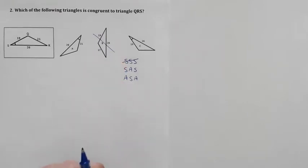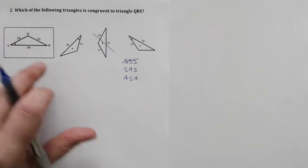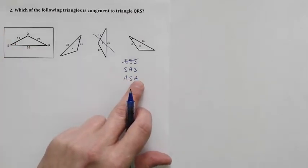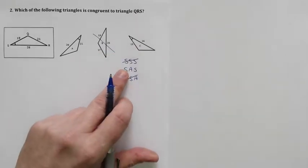Angle-side-angle. I have one angle here in QRS, I don't have two. In order to use angle-side-angle you need to have two known angles. I don't have it, so I can't use angle-side-angle, which means I'm now looking at side-angle-side to determine which of these two matches this one.